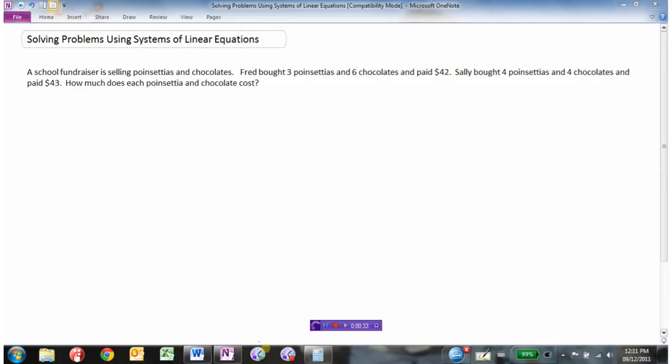So the first part of the problem is we've got to come up with an equation, and in this case we're going to come up with two equations because there's two things we don't know. How much does each poinsettia cost? Let's let P equal the cost of one poinsettia and C for the cost of one chocolate.